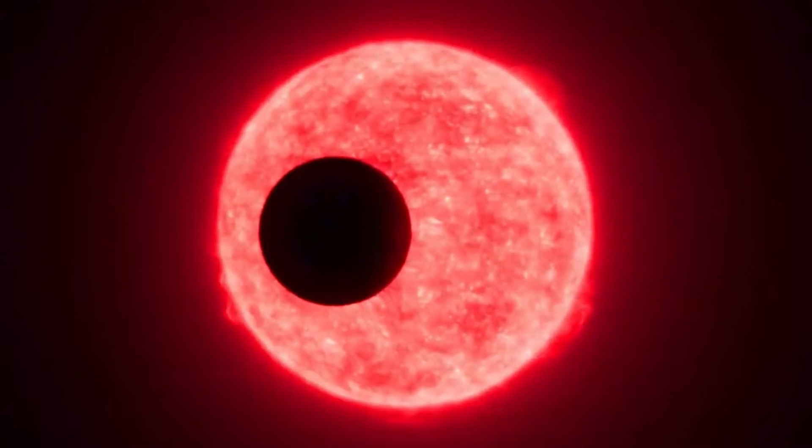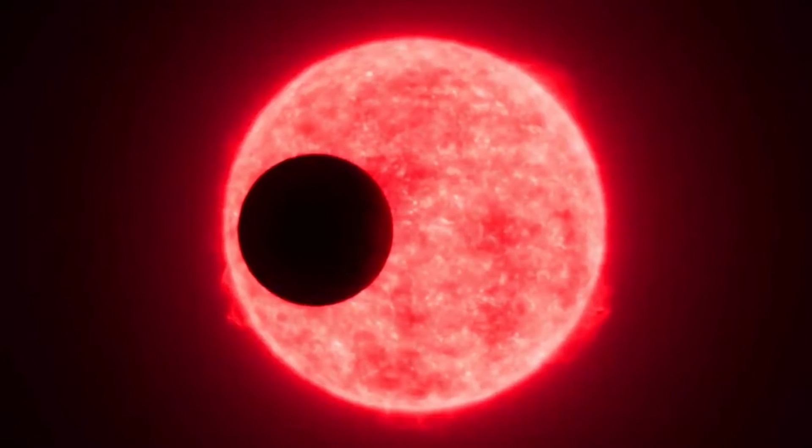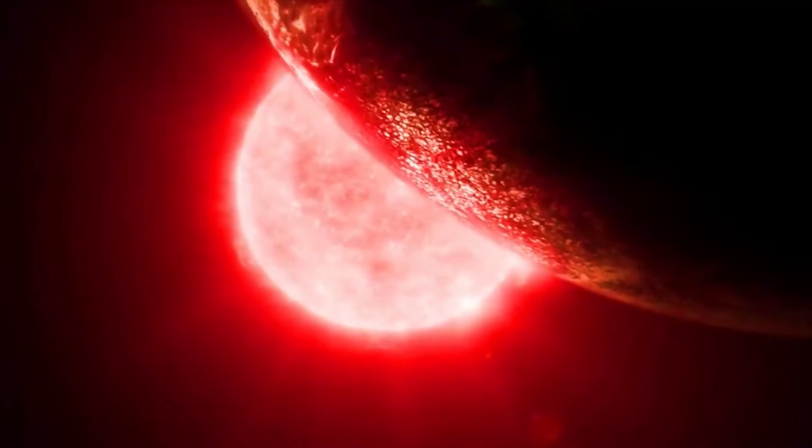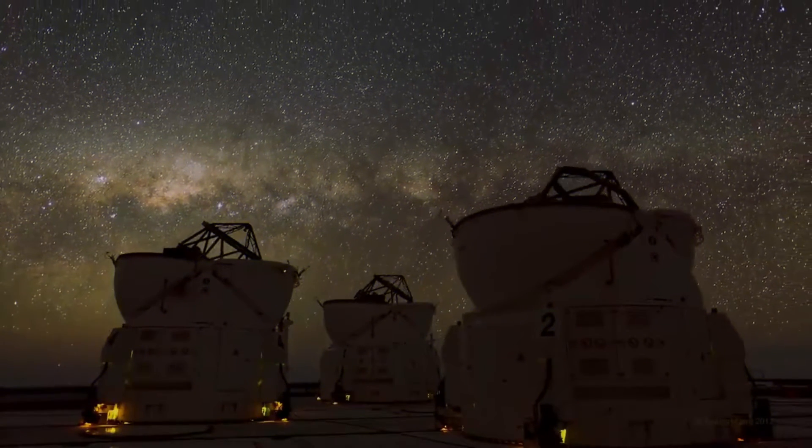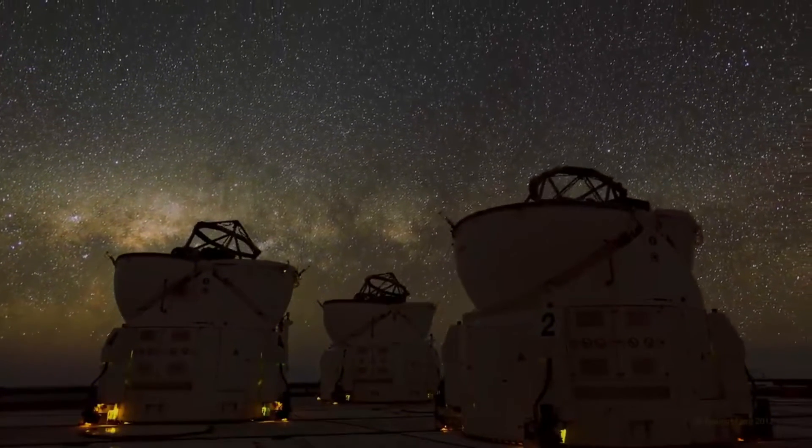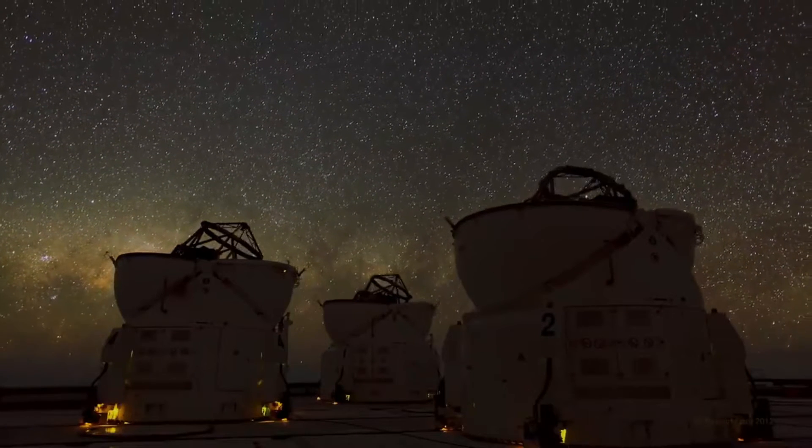This is what the Breakthrough Starshot project is doing. Using the method of studying the radial velocity of its parent star, which took several years, scientists were able to prove that Proxima Centauri b exists. The European Southern Observatory announced this on August 24, 2016.